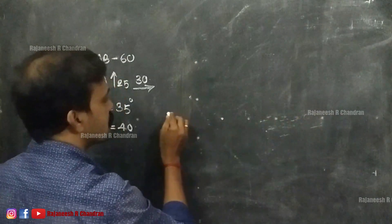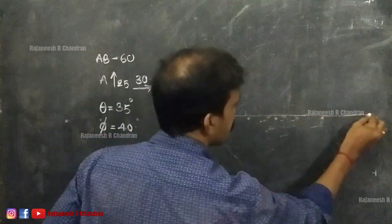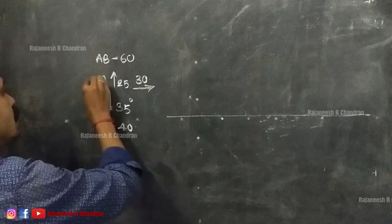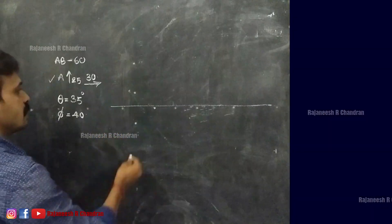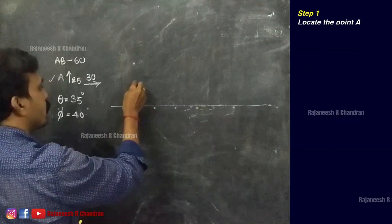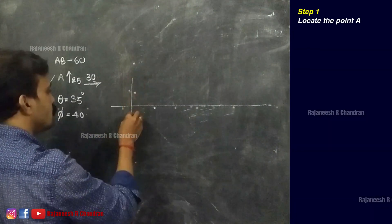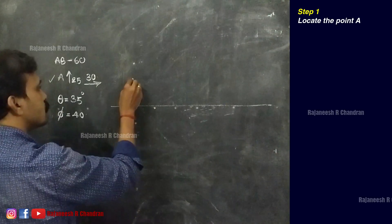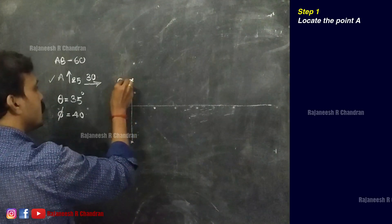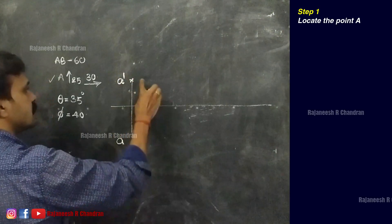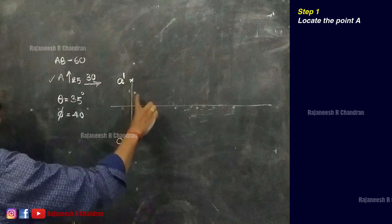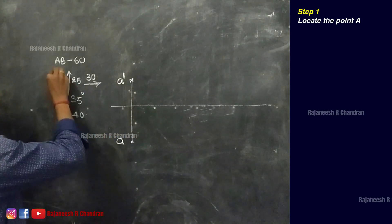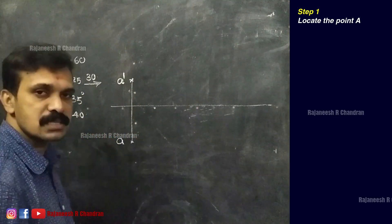So how can we start? This is the XY line. We can start by locating point A. A can be located at a height of 25mm above and 30mm in front, so this will be A' and A. This height will be 25 and this will be 30. So this data is utilized.